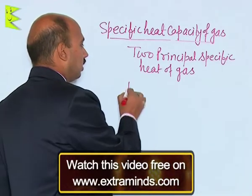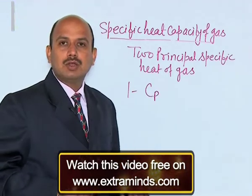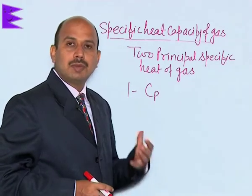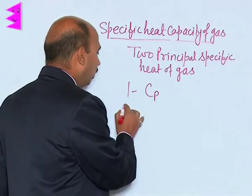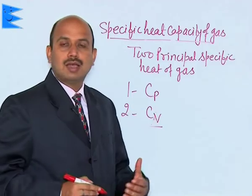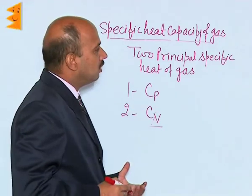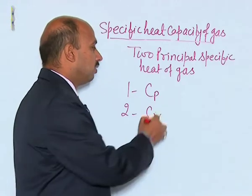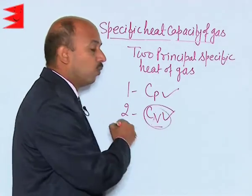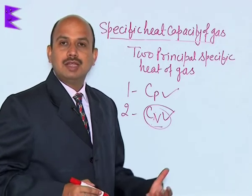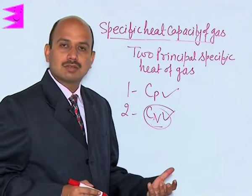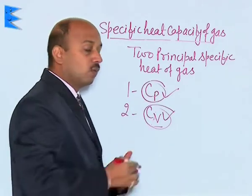Now, there are two principal specific heats of gas. The first is C p — the specific heat of gas at constant pressure — meaning the gas is heated when the pressure of the gas is kept constant. The second is C v — the specific heat of gas at constant volume. In the case of C v, the work done is 0, so whatever heat is supplied is entirely used to increase the temperature, that is, to increase the internal energy of the gas. But in the case of C p, work done is not 0.